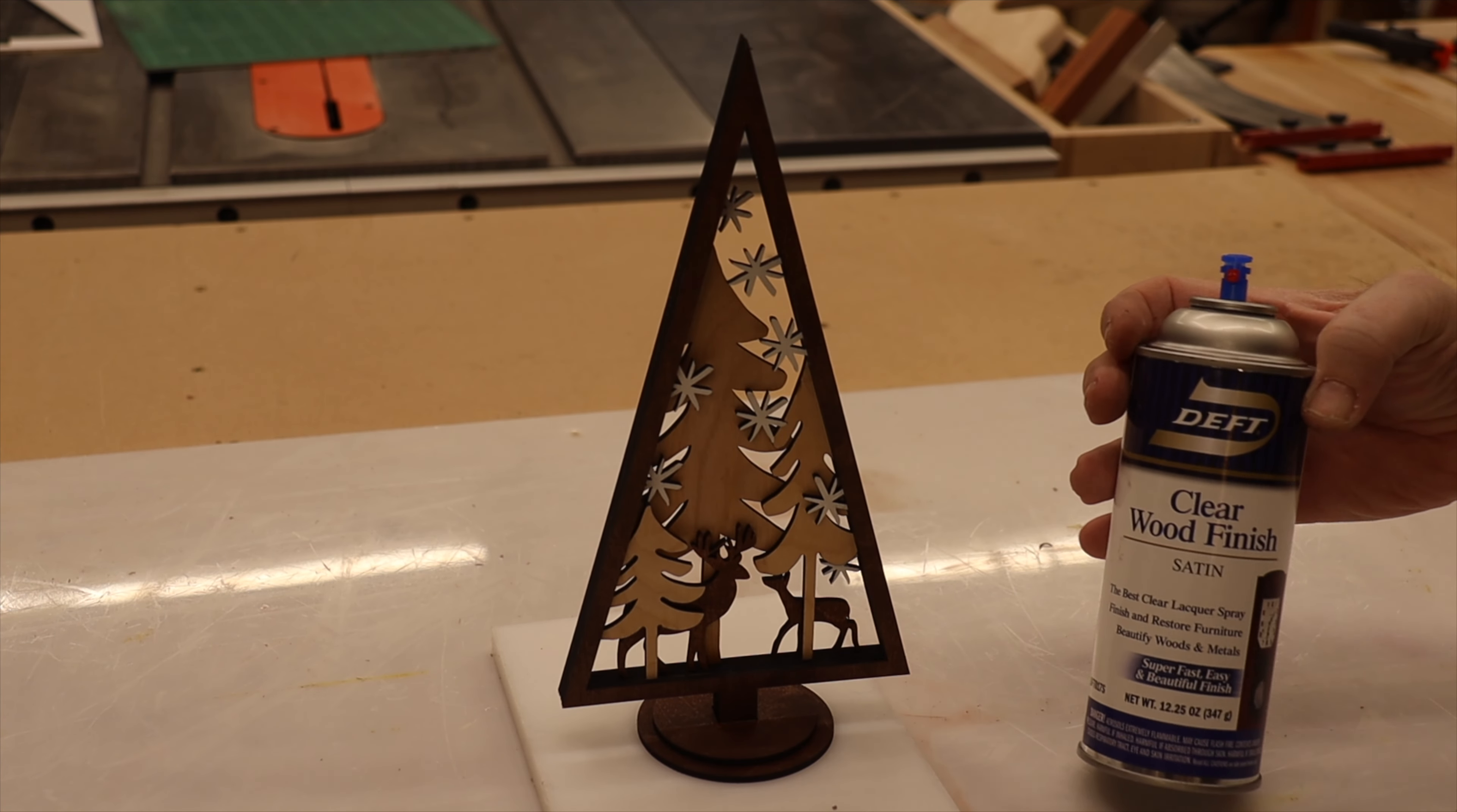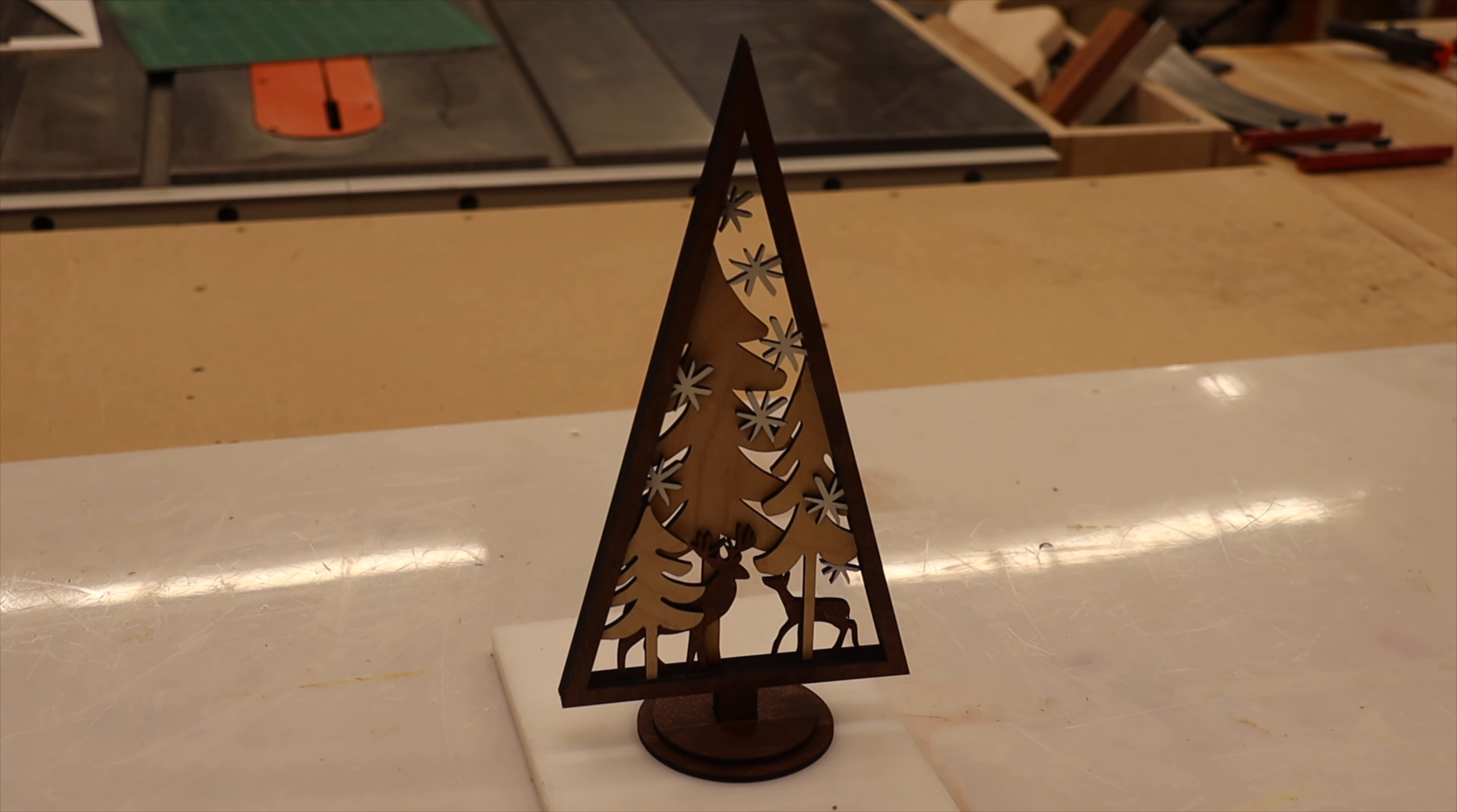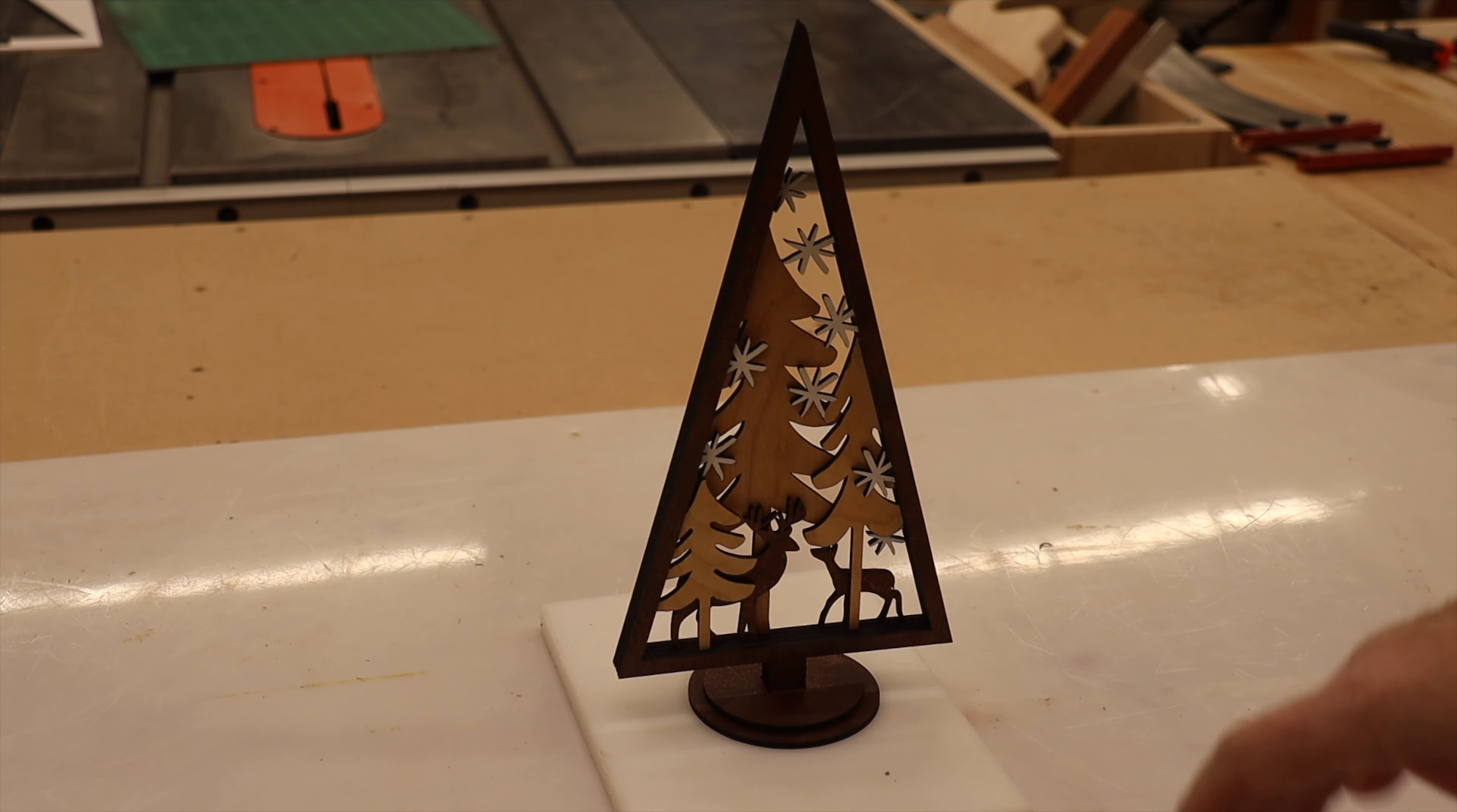Next, we're going to hit it with a little bit of clear lacquer, satin. I am going to put probably four coats of this. I'm going to leave it for 30 minutes in between each coat. And then once I'm done, I'll come back and we'll talk about it.